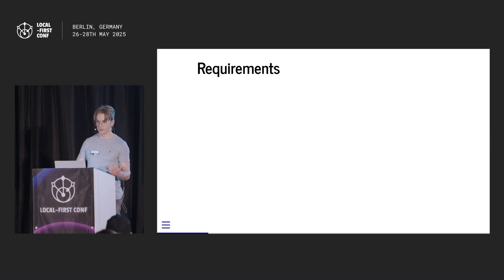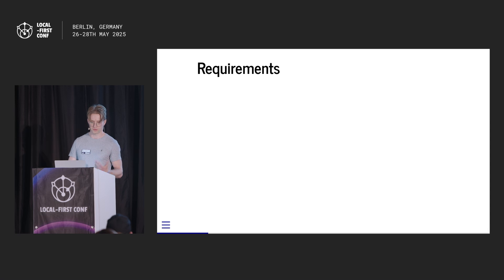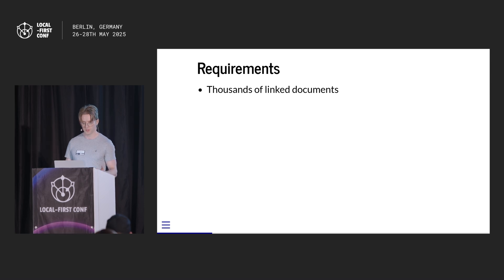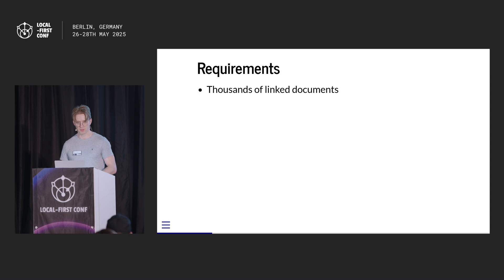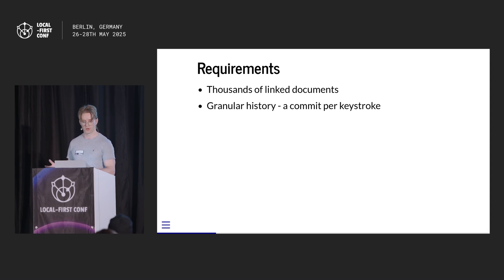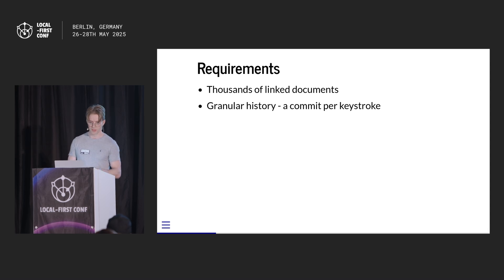There are some requirements from the way users typically use automerge. First, we expect thousands to tens of thousands of linked documents per user — think a big wiki or a user's notes over a long period of time. We also expect those documents to have very granular history. We produce a commit per keystroke, which means we can use the same sync substrate for long-running offline asynchronous collaboration and live collaboration. It also gives us nice version control features — we can produce really good diffs.